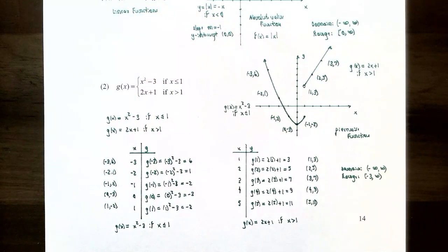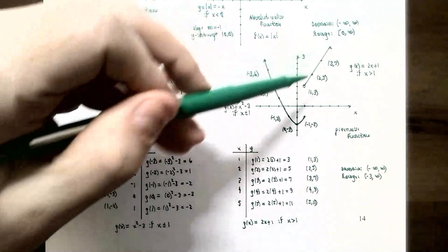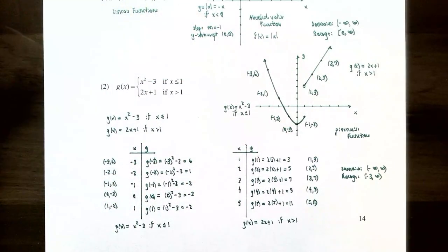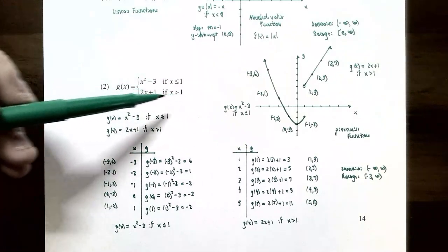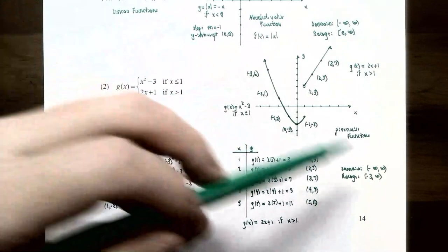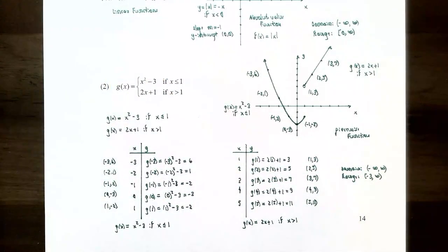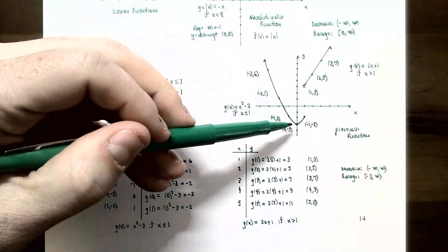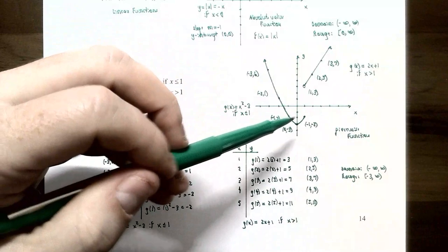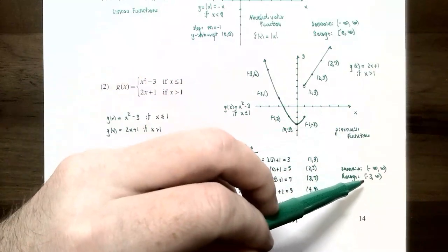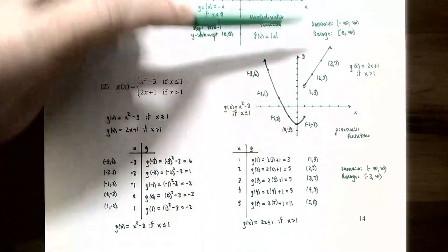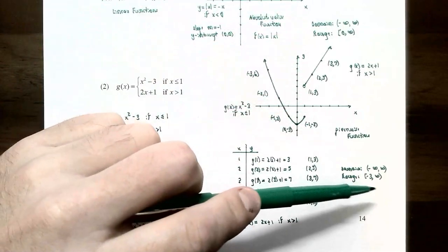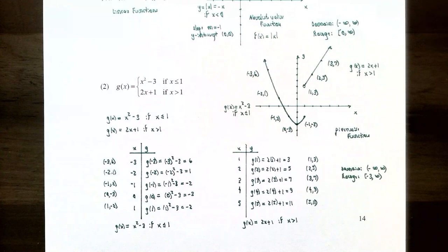The domain of g(x) is all real numbers — negative infinity to infinity — since every x value is used. For the range, the graph doesn't go any lower than -3, so the range is [-3, ∞).